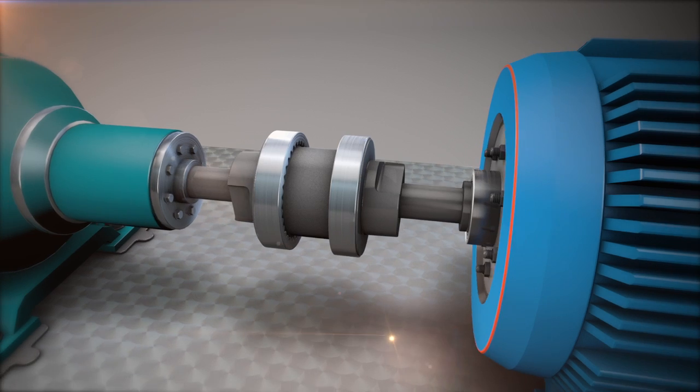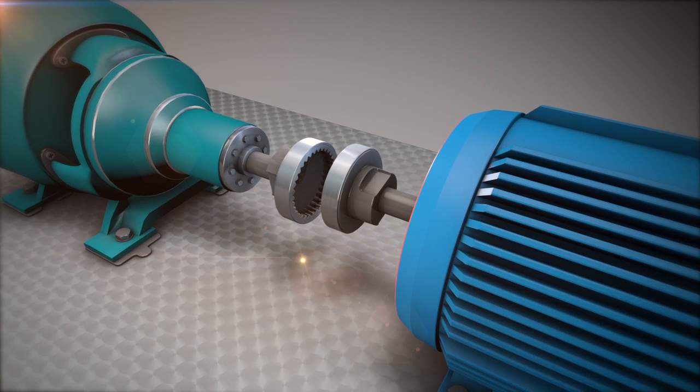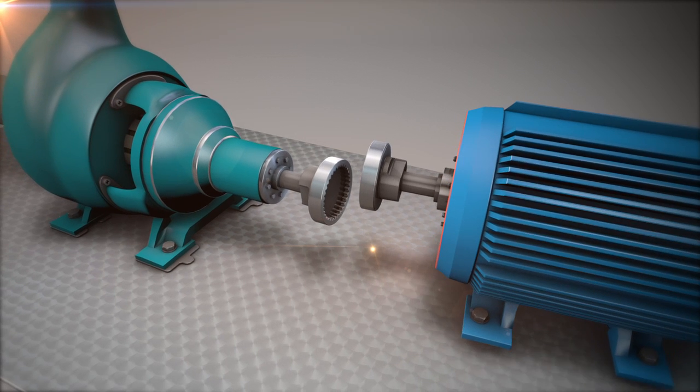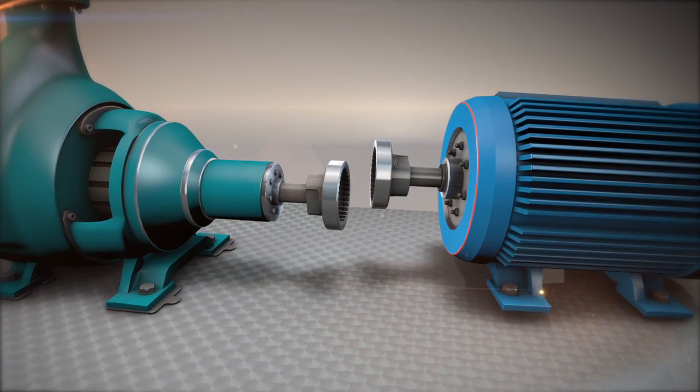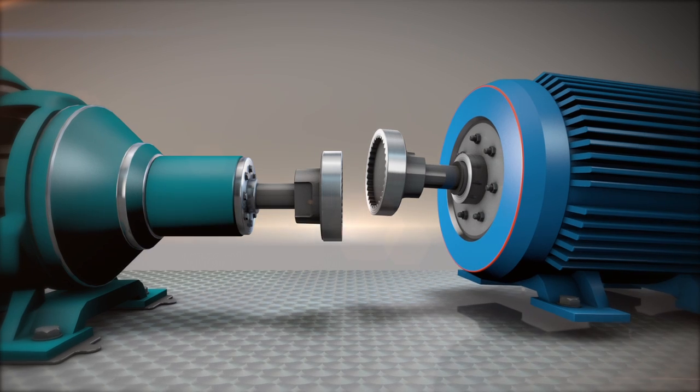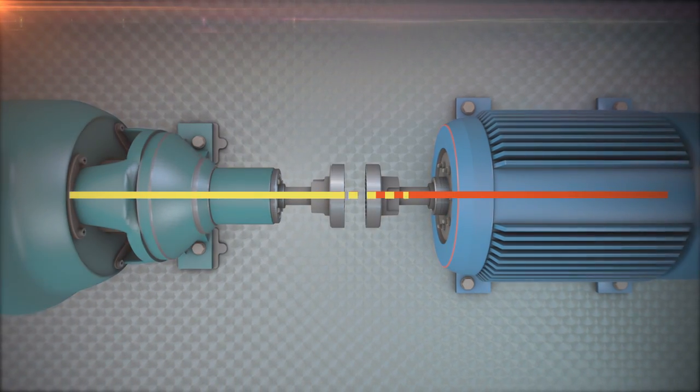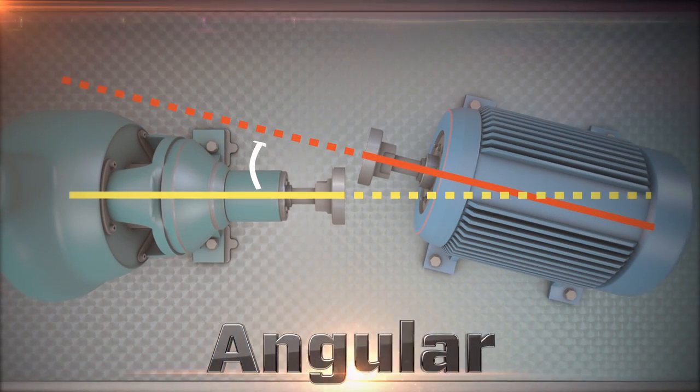At the coupling, or point of power transmission, typically the machines will be misaligned in two ways and in two dimensions. Let's visualize this: vertical and horizontal. Both vertical and horizontal directions each have a combination of offset and angular misalignment.